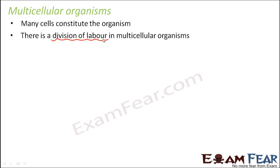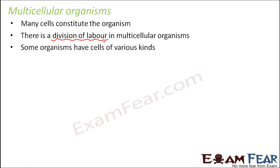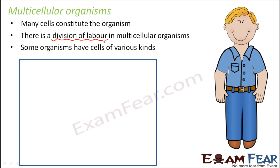In unicellular organisms, there is just one cell, so there is no way to divide the work — if there is one person in the team, that person has to take care of all the work. But if there are 10 members in a team, you can divide the work amongst them. Similar is the case here. So some organisms have cells of various kinds, and examples of multicellular organisms include human beings.